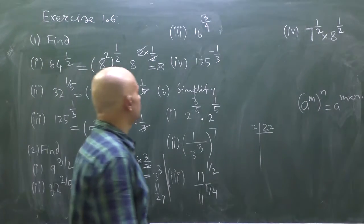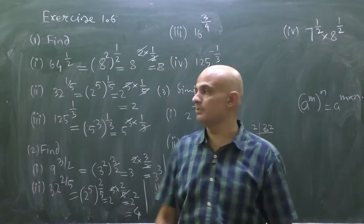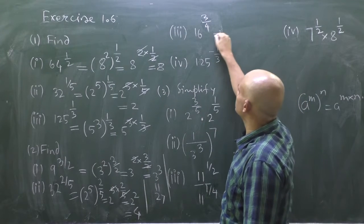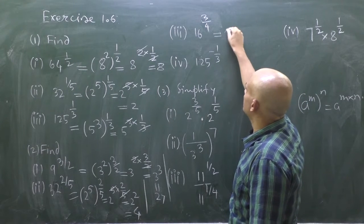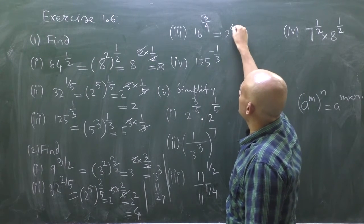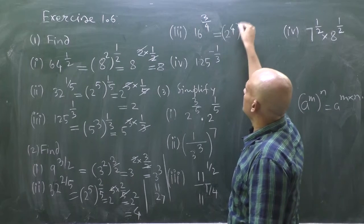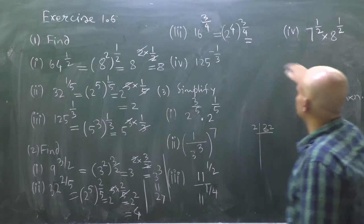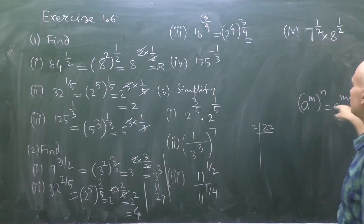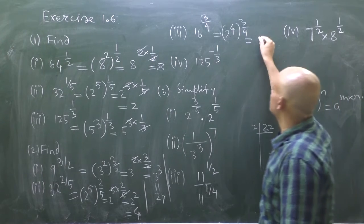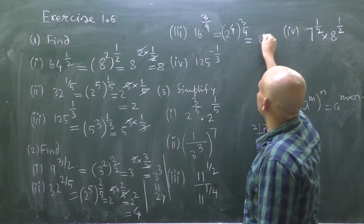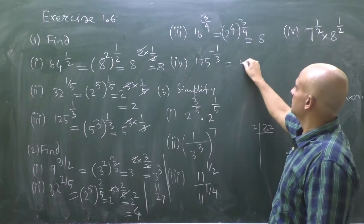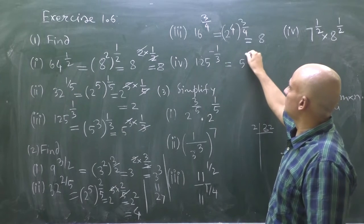For the third part of question 2, we have 16 to the power 3/4. Write 16 as 2^4, so it becomes (2^4)^(3/4). Using the same concept — 4 × (3/4) — the 4s cancel and the answer is 8.